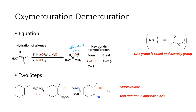We already saw one reaction where we were able to start with an alkene and get an alcohol product on the more substituted side — that was an acid-catalyzed hydration. Water was the reactant, and we used a strong acid, denoted as H+ or H3O+, to facilitate the reaction speed as a catalyst, and we formed an alcohol.